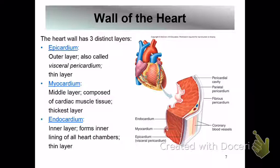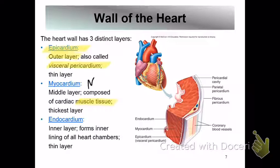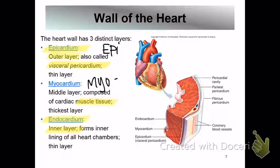The layers of the heart: around the heart we have the epicardium, also called the visceral pericardium — that's the outer layer. The prefix EPI means outside, like epidermis of skin. The myocardium is the muscle layer in the middle — MYO means muscle. And the endocardium is the inner lining of the heart, inside the chambers. You'll see all three of these on the test.